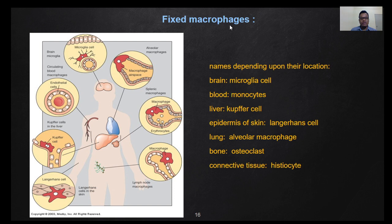For fixed macrophages, their names depend upon their location. For example, in the brain they are called microglia cells; in the blood, monocytes; in the liver, Kupffer cells; Langerhans cells in the epidermis of the skin; alveolar macrophages in the lung; osteoclasts in the bone; and histiocytes in the connective tissue.